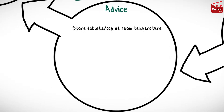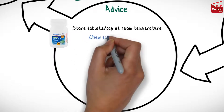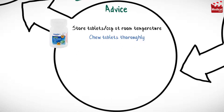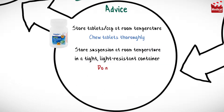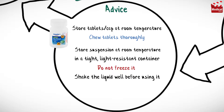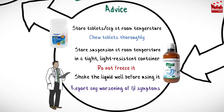Store tablets or capsules at room temperature in a well-closed container. Chew tablets thoroughly, or allow tablets to dissolve in mouth. Also store suspension at room temperature in a tight and light-resistant container; do not freeze it. Shake the liquid well before using it. Report any worsening of gastrointestinal symptoms to your physician.